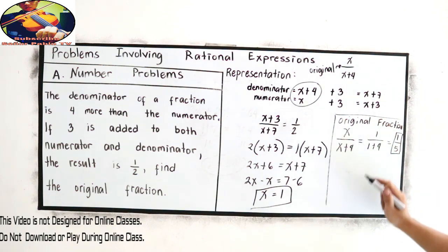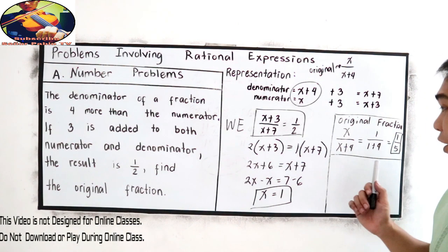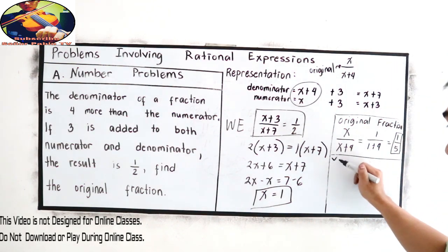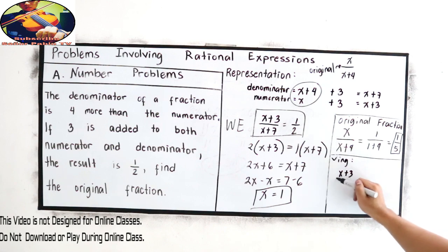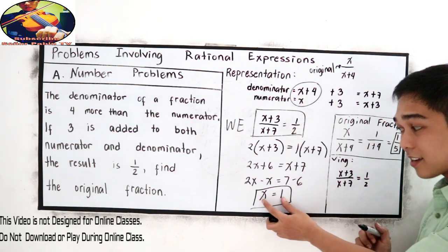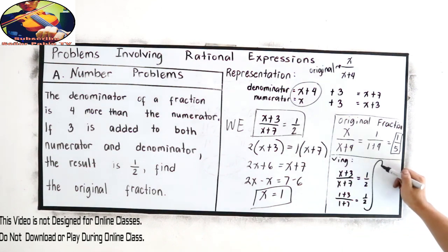So one fifth is our original fraction. If you want to check whether your answer is correct, let's do the checking. In our working equation, we have x plus three over x plus seven is equal to one half. So substitute the value of x. So x is one. One plus three over one plus seven is equal to one half. One plus three, that is four, over one plus seven, that is eight, is equal to one half.